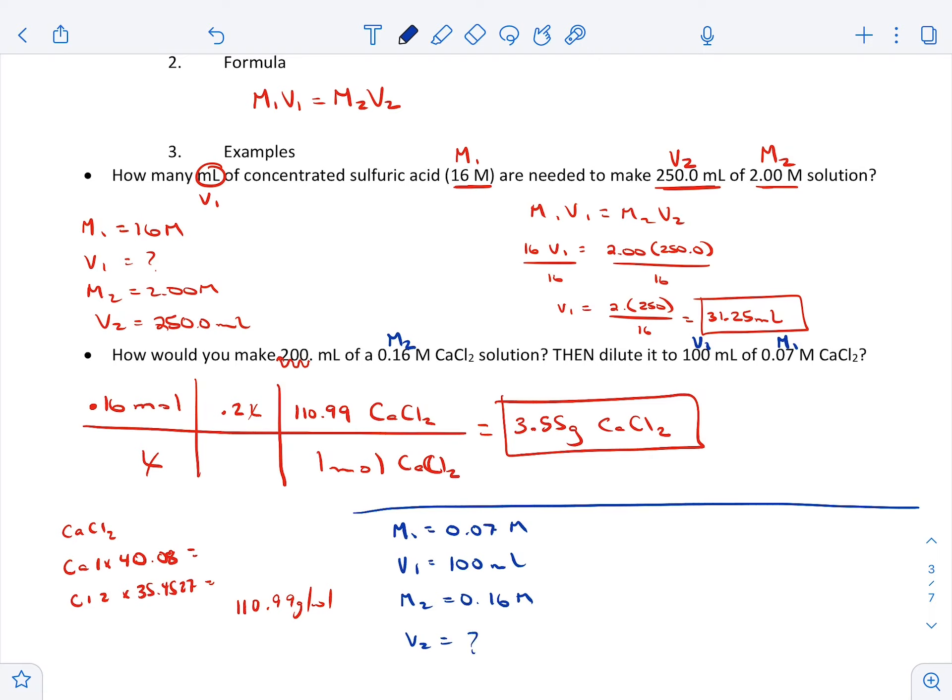So we're going to say 0.07 times 100 is equal to 0.16 times V2. All right, to solve this we're going to divide each side by 0.16, and that'll tell us how many milliliters we need. So 0.07 times 100, and then we're going to divide by 0.16, we need, oh V2, we need 43...